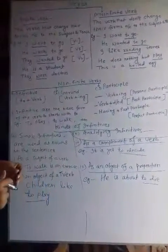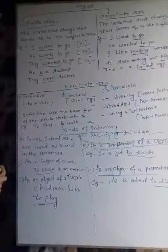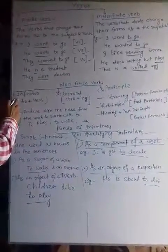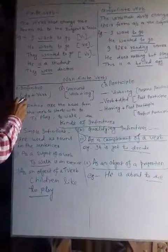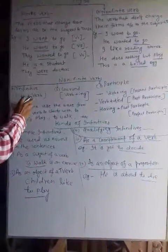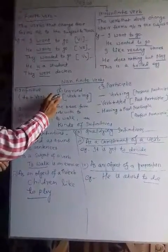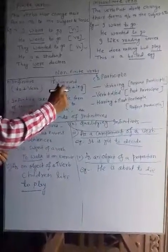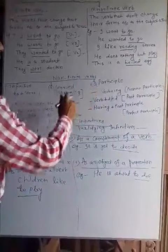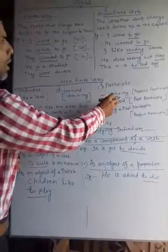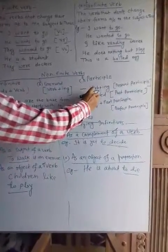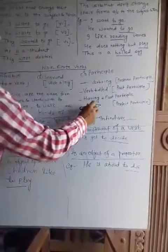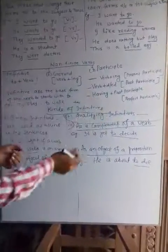Now see the kinds of non-finite verbs. There are three types of non-finite verbs. First, infinitive — it contains 'to' plus the base form of the verb. Second is gerund — verb plus -ing. And the third kind is participle. There are three types of participle: present participle (verb plus -ing), past participle (verb plus -d or -ed), and the third is perfect participle (having plus past participle).